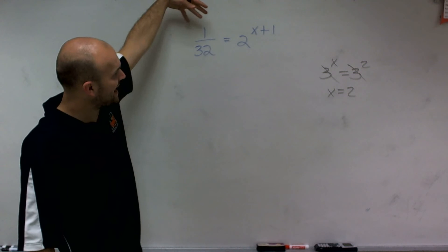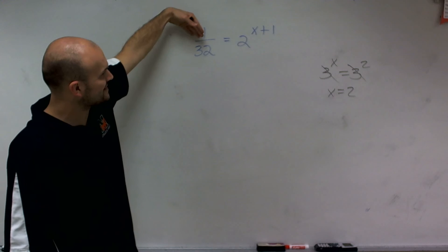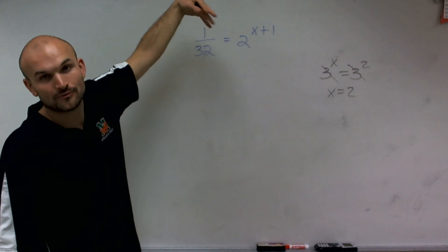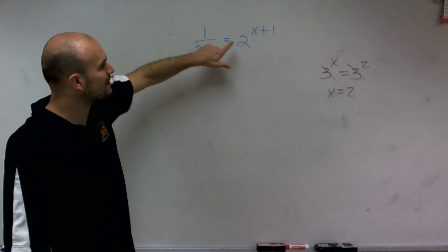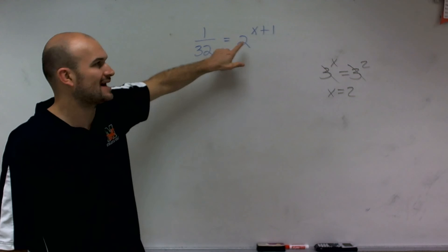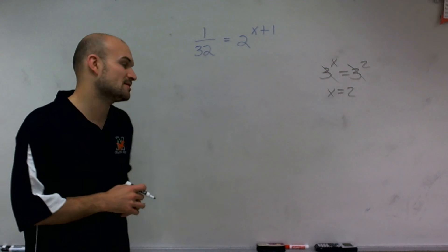So here, I have a base of 2. But then I see, all right, if I want to follow that rule, I need to see how can I rewrite 1 over 32 as a base of 2. So there's a couple things I want you to understand.